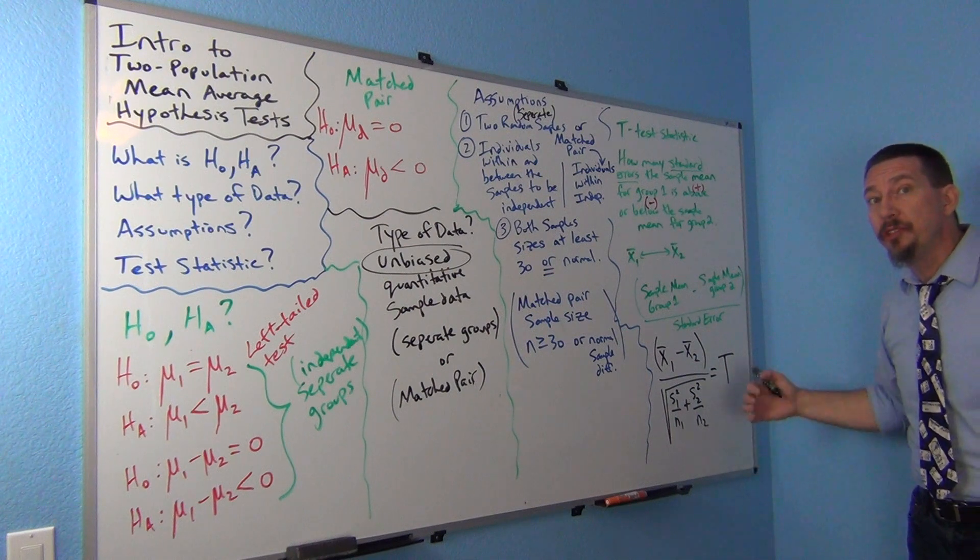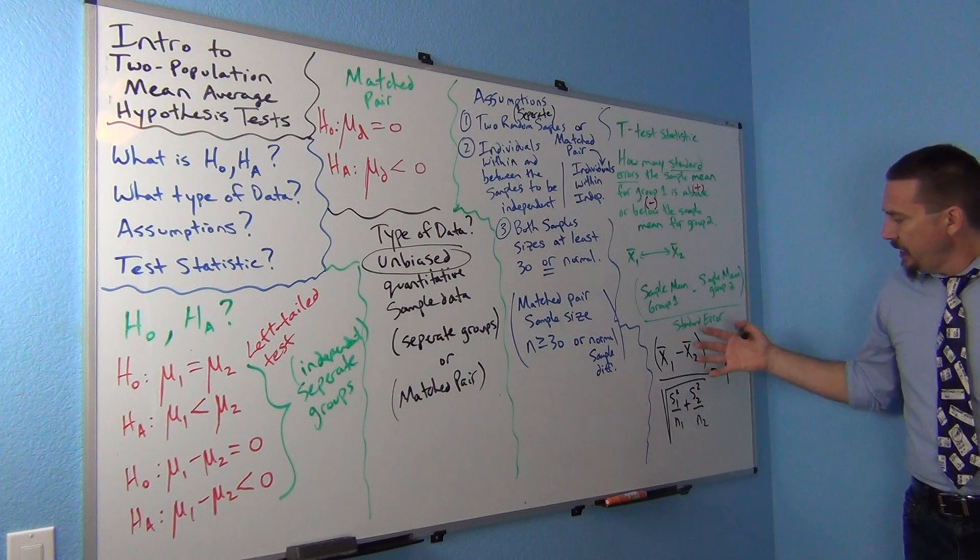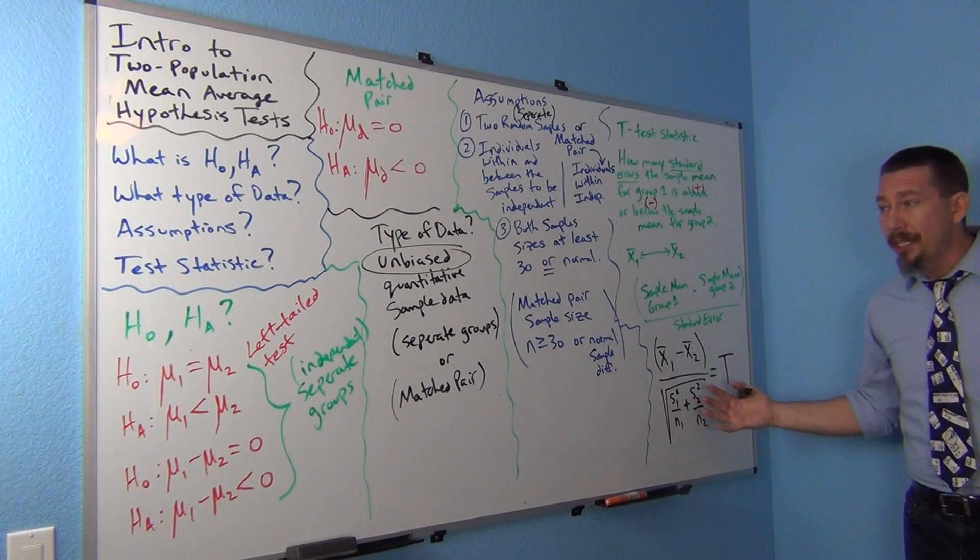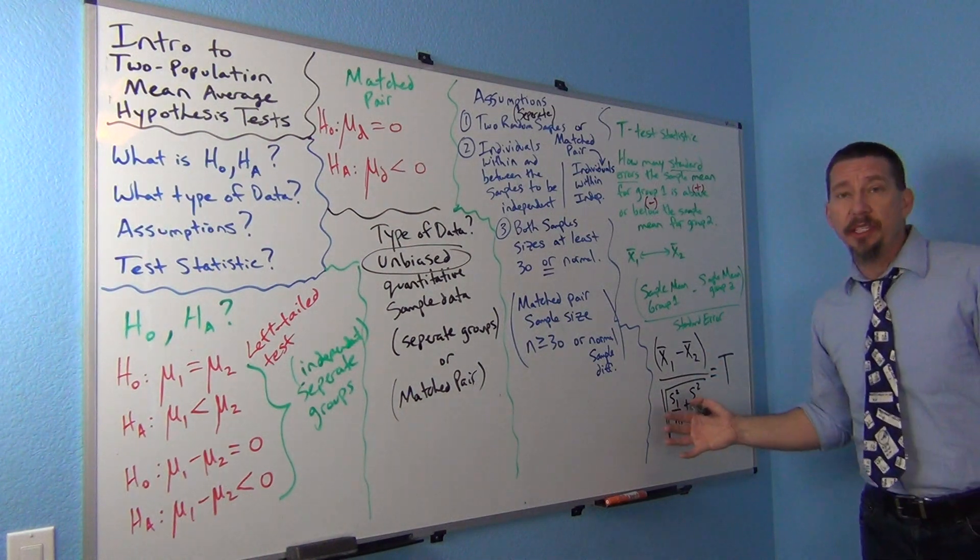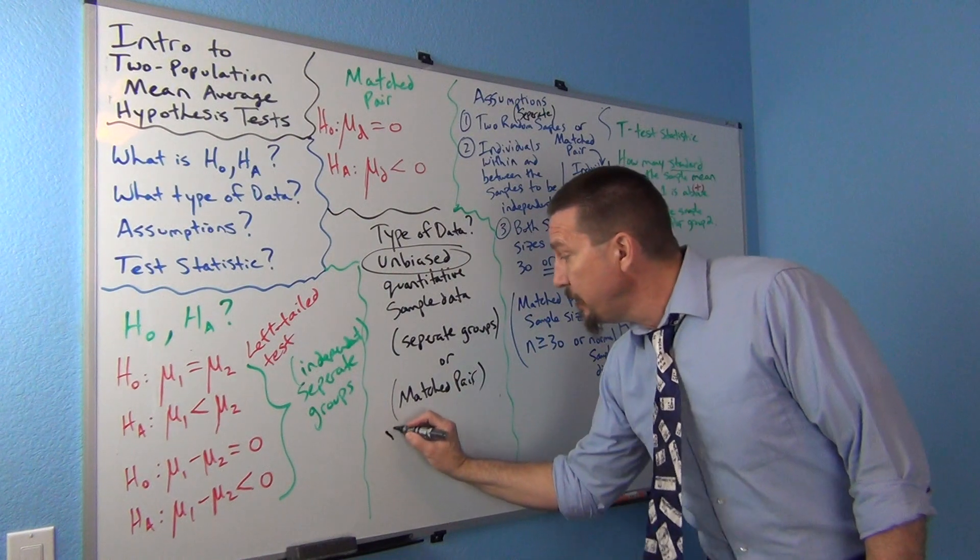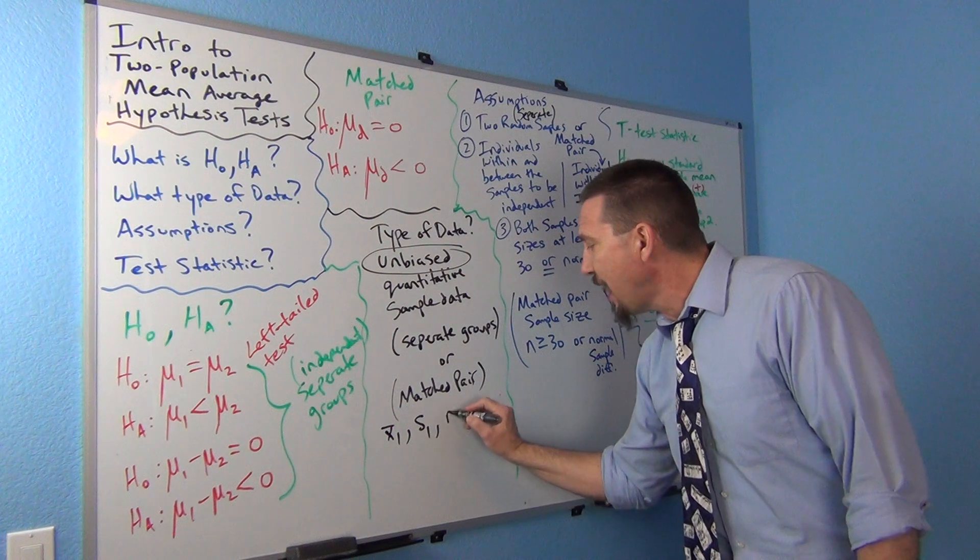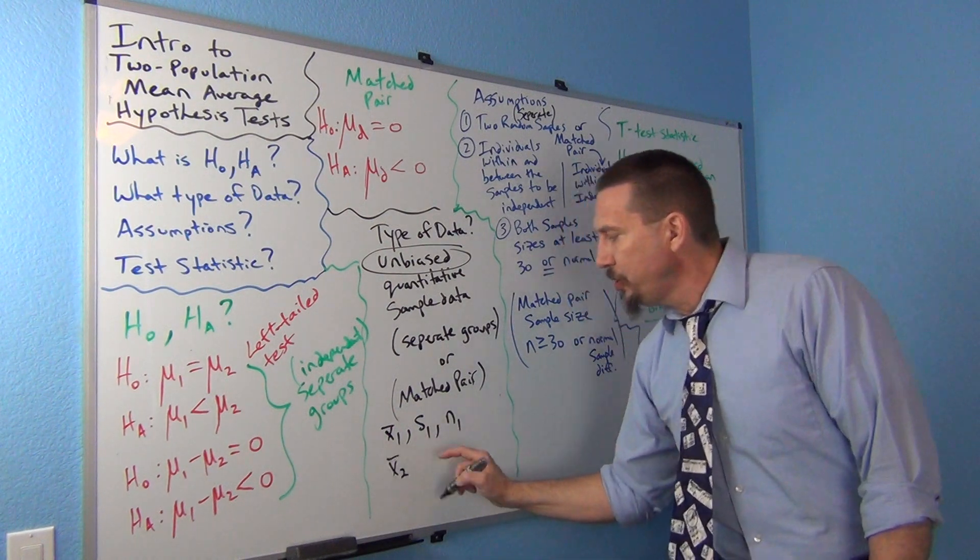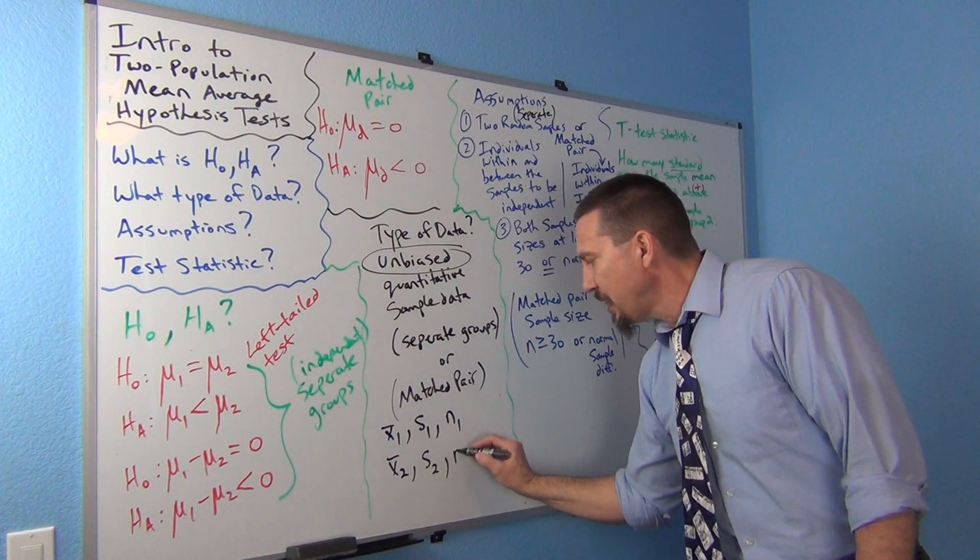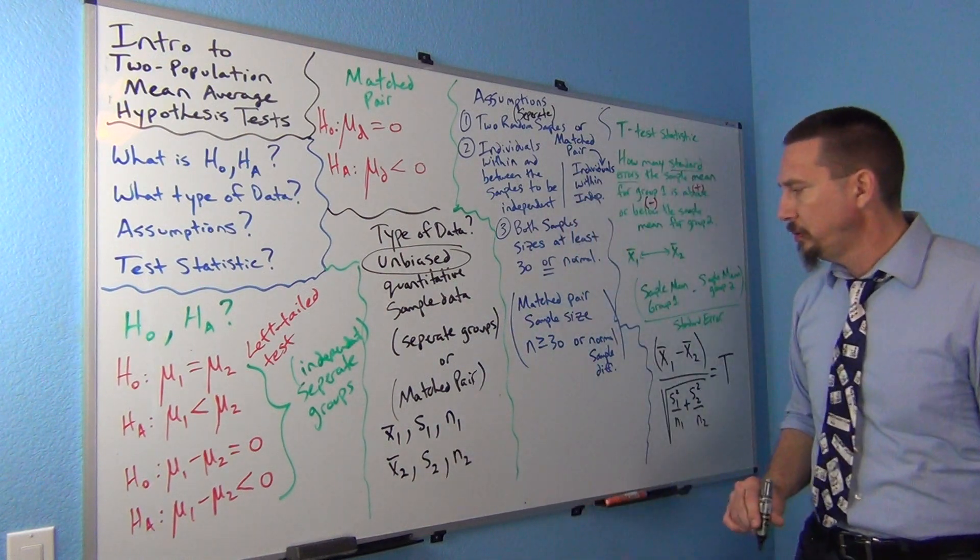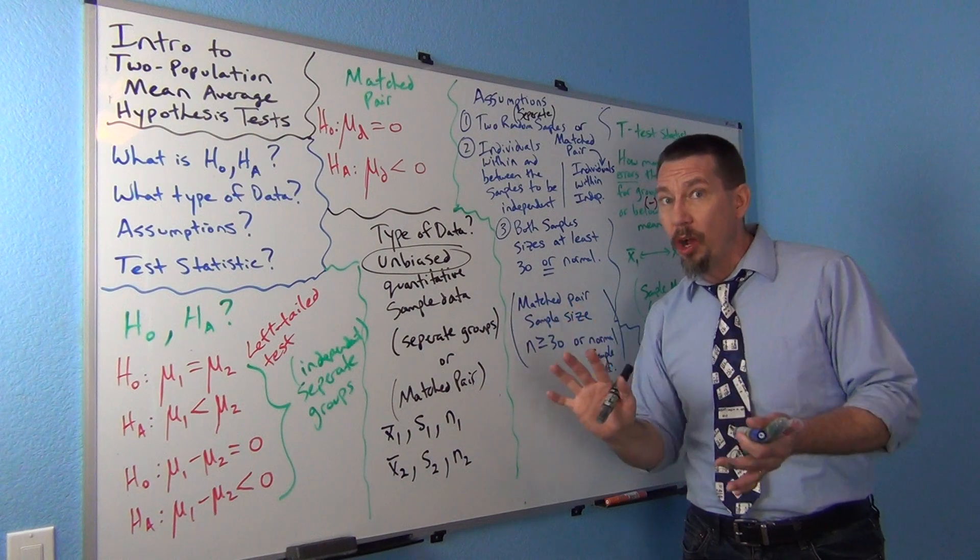So when we look at critical values, we're going to be using the t-distribution. So in your sample data, a lot of times you'll either have raw quantitative data or the computer may ask you for this information. In other words, they'd ask you for the sample mean for group one, the sample standard deviation for group one, the sample size of group one, the sample mean for group two, the sample standard deviation for group two, and the sample size of group two. So a lot of times, that's information the computer will want if you don't have the raw data.